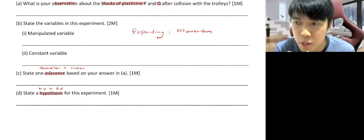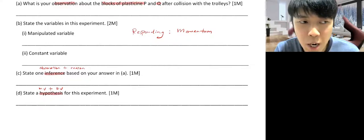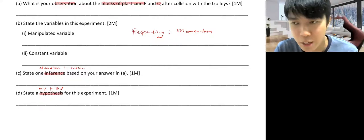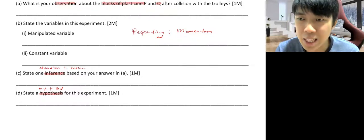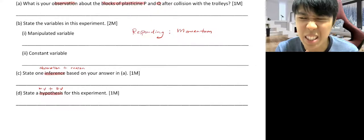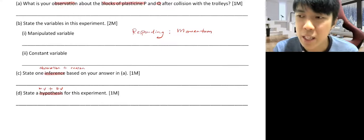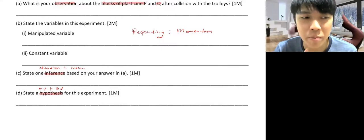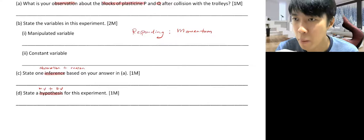The hypothesis should sound like: 'The higher the velocity of the object, the larger the momentum.' Note that for velocity, you cannot say 'faster' or 'slower' — you must say 'higher' or 'lower' velocity. For momentum, you can say 'the larger' or 'the greater' the momentum — that is acceptable.